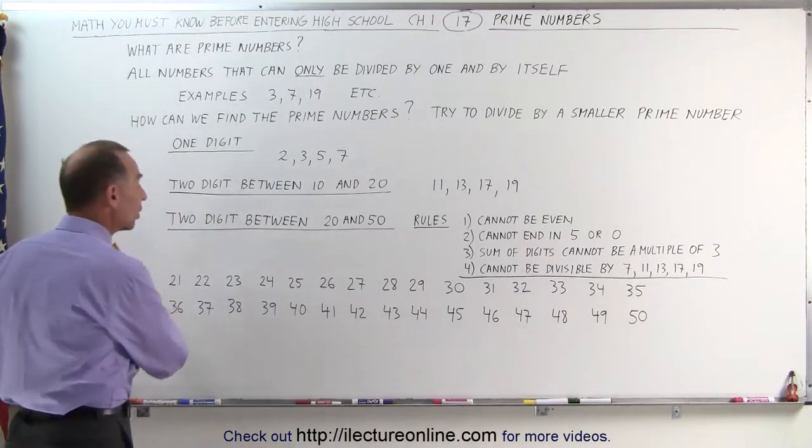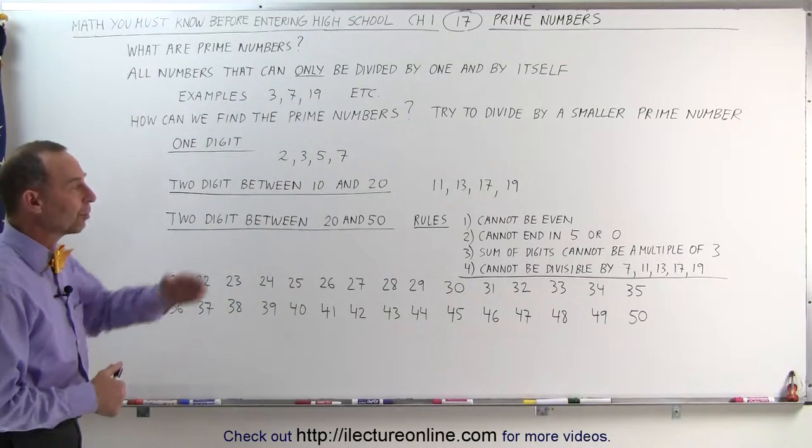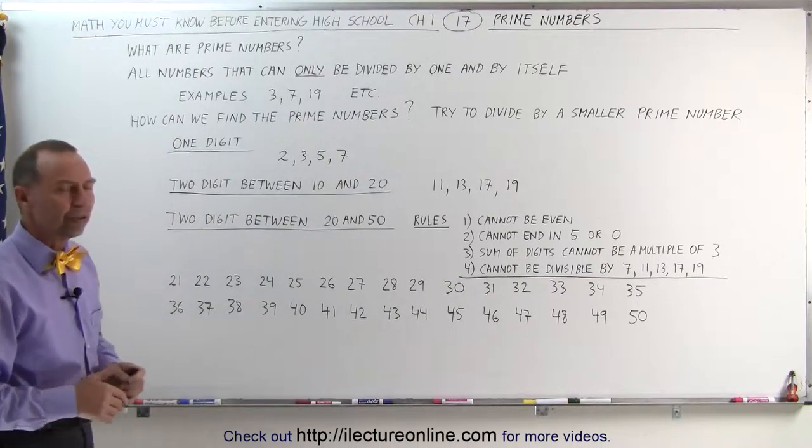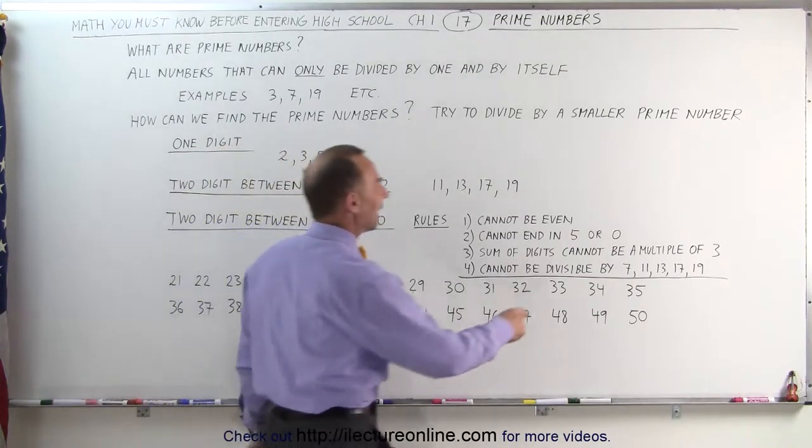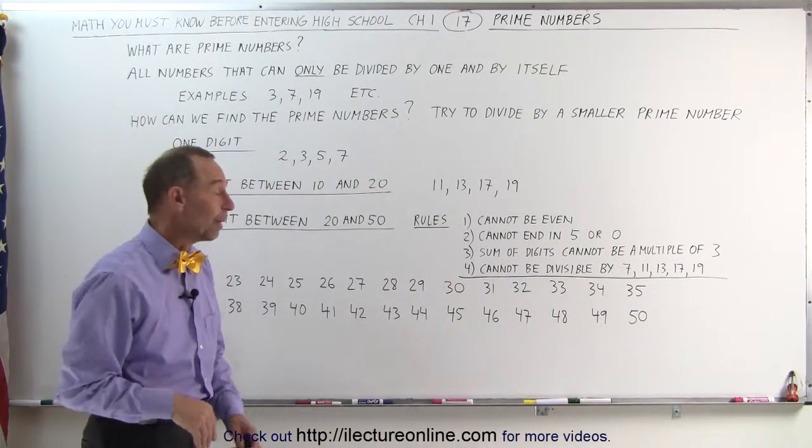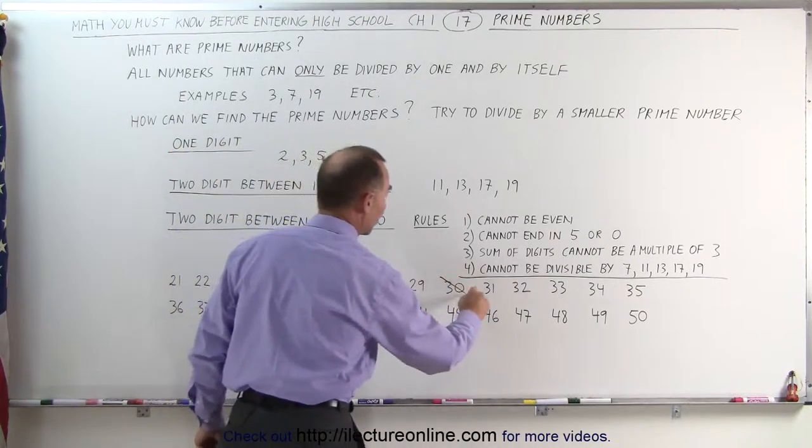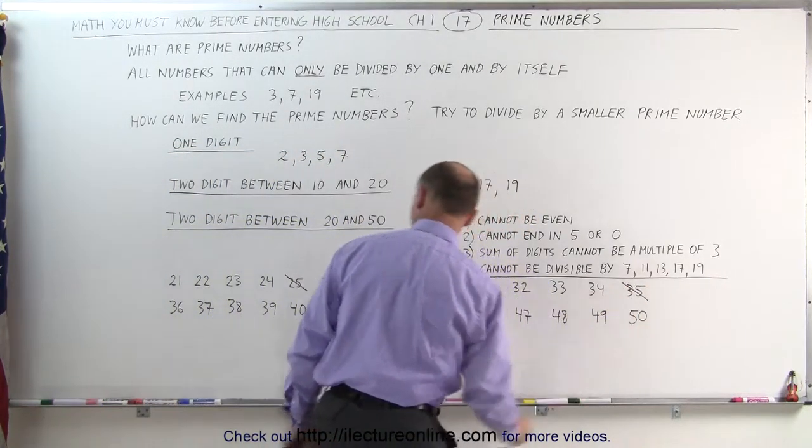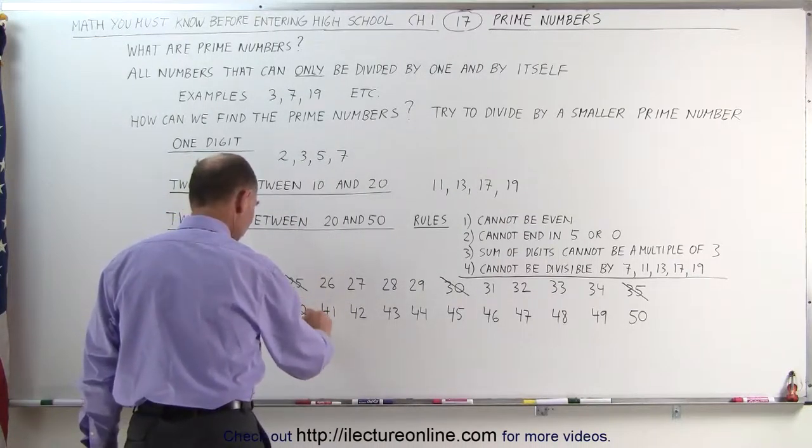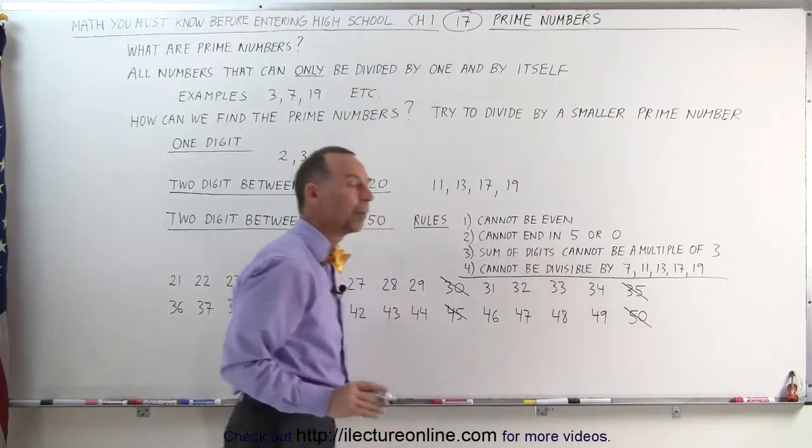So here are the numbers from 21 to 50. Let's quickly determine which of these are prime numbers following the rules. First of all, I like the rule if it ends in a 5 or 0, it cannot be a prime number because then it's divisible by 5. So all the numbers that end in 5 or end in 0 can simply be eliminated. Here we go, 40, 45, and 50. We're sure that those are not prime numbers.